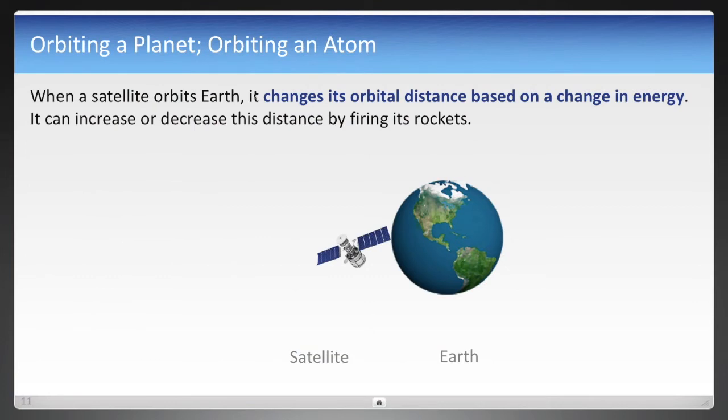Now let's take a look at an electron orbit again, but compare it to a satellite that goes around Earth. When a satellite orbits around Earth, it can change its distance based on a change in energy. Let's say the satellite is about a thousand miles from the surface of the Earth. It can increase or decrease that distance by firing its forward or rear rockets, and now it's changed its orbital. The satellite goes from a thousand miles up to a thousand and one miles or a thousand and two just by changing energy.